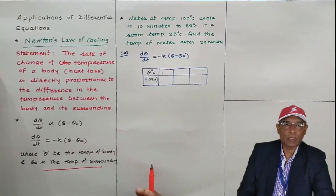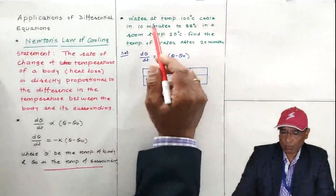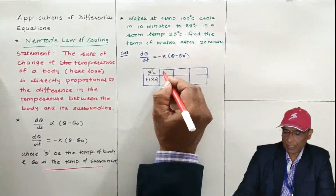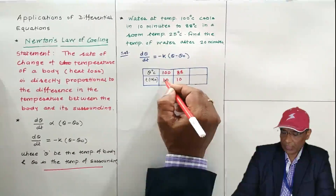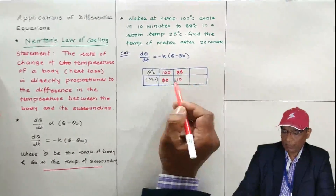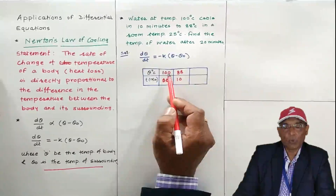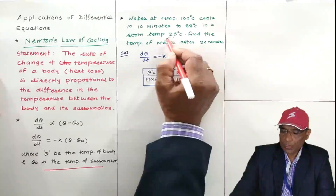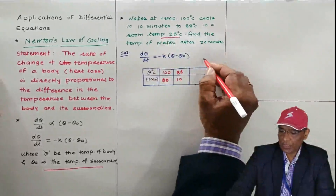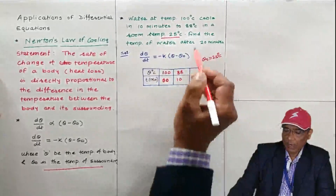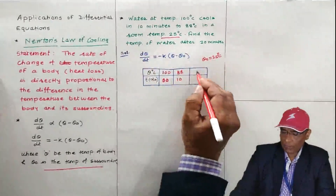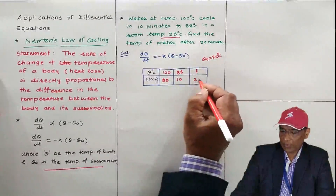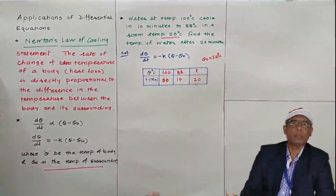For example, consider water at an initial temperature of 100 degrees centigrade. After 10 minutes, the temperature decreases to 88 degrees centigrade, because the room temperature is 25 degrees centigrade. We have to find the temperature of the body after 20 minutes. This is a simple problem.